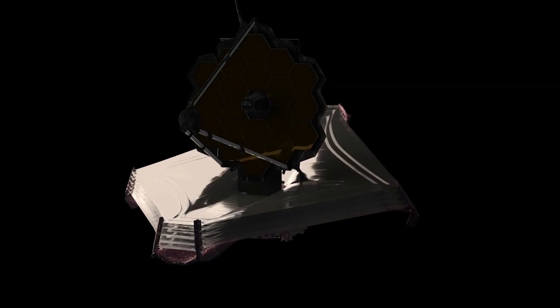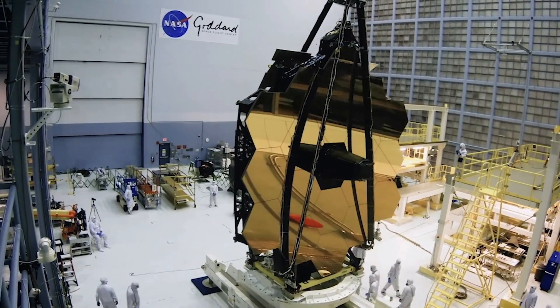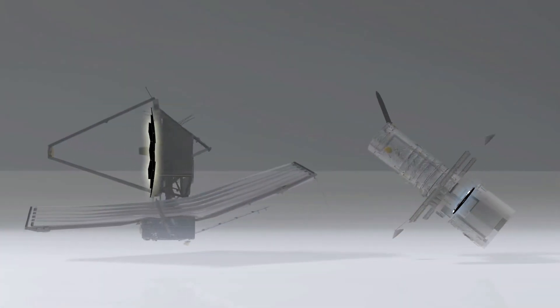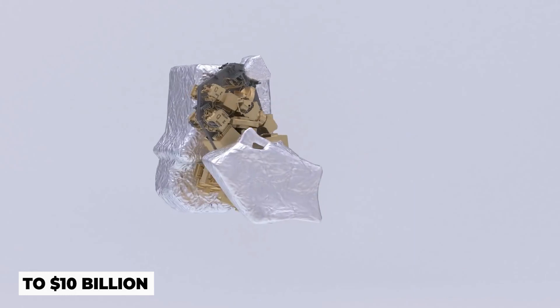Originally scheduled to launch in 2010 and cost about $1 billion, Webb, a joint venture among U.S., European, and Canadian space agencies that took 10,000 people to construct, experienced a sequence of maddening delays as costs ballooned to $10 billion.